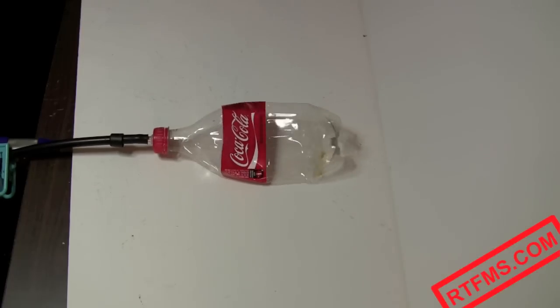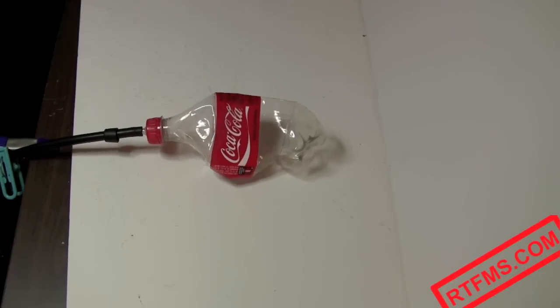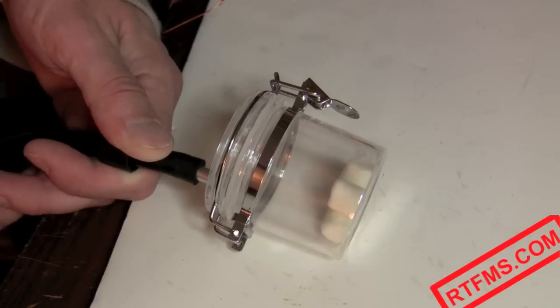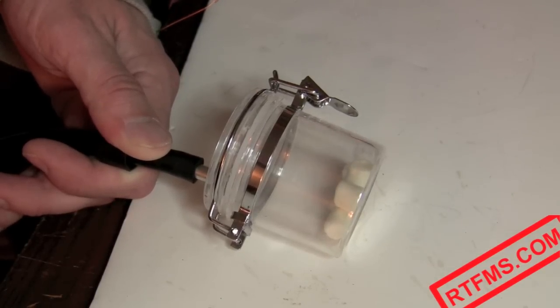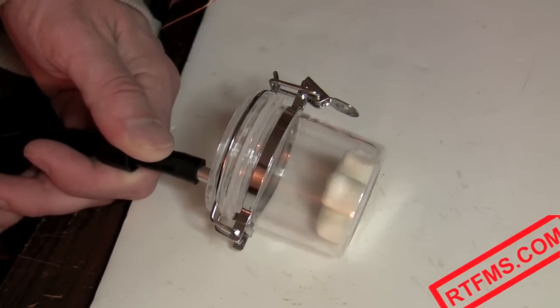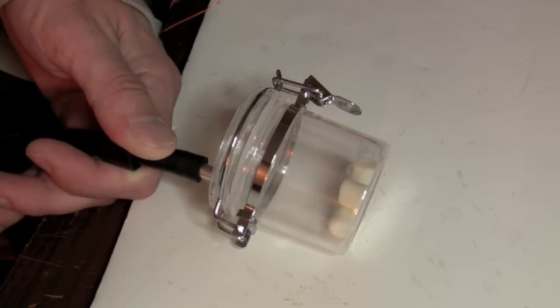So, here is our vacuum pump and chamber. You can use it to squash plastic bottles or inflate marshmallows. In the following episodes I'll show you how to use it in a more scientific manner. Keep watching RTFM's video blog!